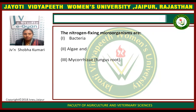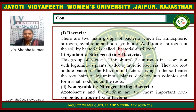The nitrogen-fixing microorganisms include: bacteria, algae, mycorrhiza (fungus root). Regarding bacteria: there are two main groups of bacteria which fix atmospheric nitrogen — symbiotic bacteria and non-symbiotic bacteria. Addition of nitrogen to the soil by bacteria is called bacterial fertilizer. Symbiotic nitrogen-fixing bacteria fix nitrogen in association with leguminous plants. They are root nodule bacteria. The Rhizobium bacteria living in the soil enter the root hairs of leguminous plants, develop into colonies, and form small nodules on the roots. They take carbohydrates from the leguminous plants and absorb nitrogen from the atmosphere.